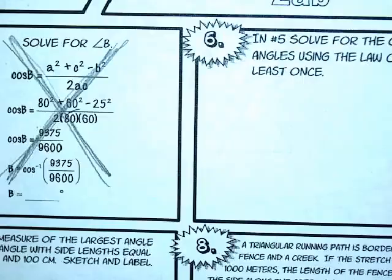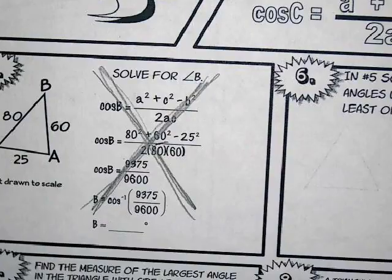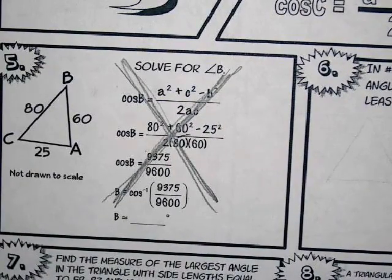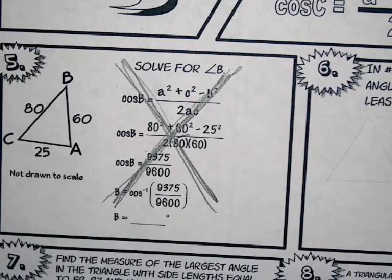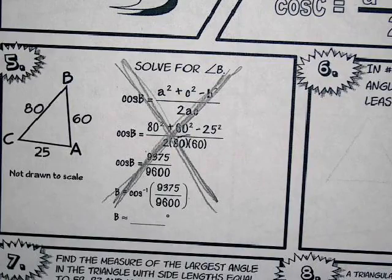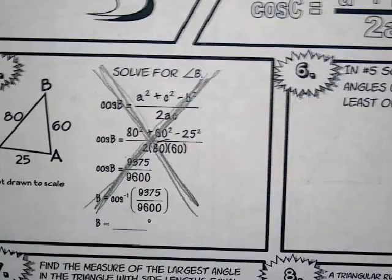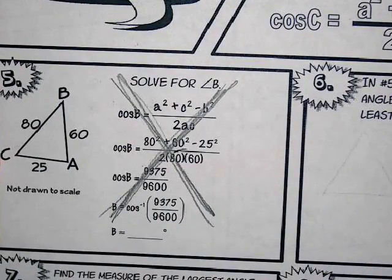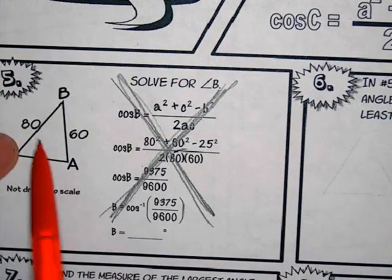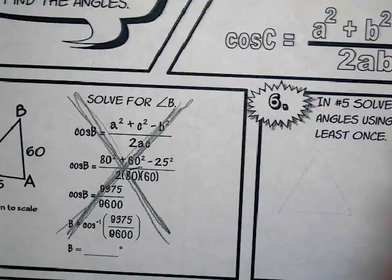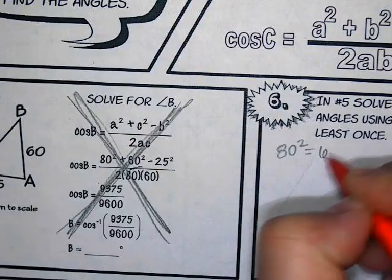Whenever you use law of cosines, you should always go from the biggest angle to the smallest angle. So she started off finding the smallest angle. How did I know? The side is the smallest — the biggest angle is across from the biggest side, the smallest angle is across from the smallest side. So if I wanted to find the biggest angle first, I should start with the biggest side squared equals the other two sides added together minus 2 times the other two sides times cos A.